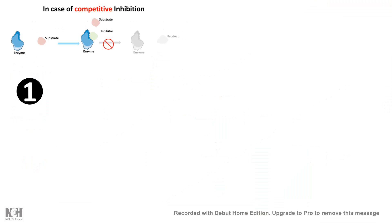In this video we will quickly review the several types of reversible inhibition and how the kinetic data look like under these conditions. Let's begin. First we'll talk about competitive inhibition.